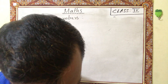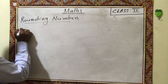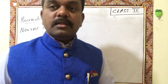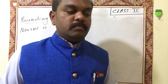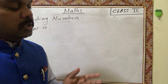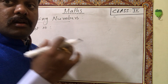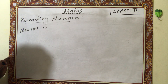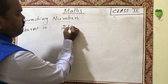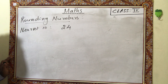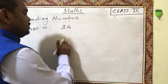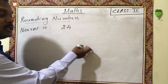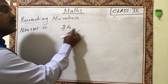Rounding to the nearest 10: the answer will always be a multiple of 10 — like 10, 20, 30, 40, 50, and so on, or 100, 110, 120, 130. For example, round 24 to the nearest 10. The answer will be a multiple of 10 — either 20 or 30. The middle of 20 and 30 is 25.